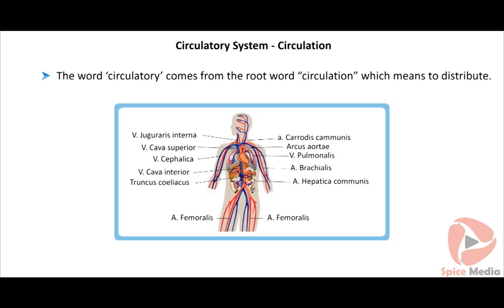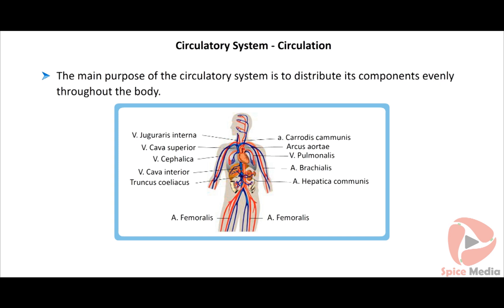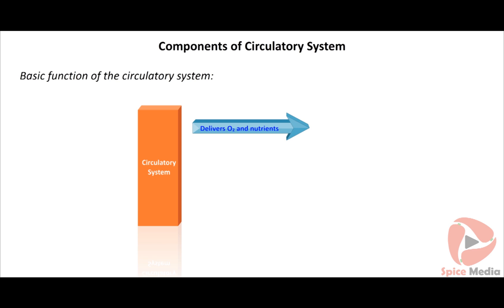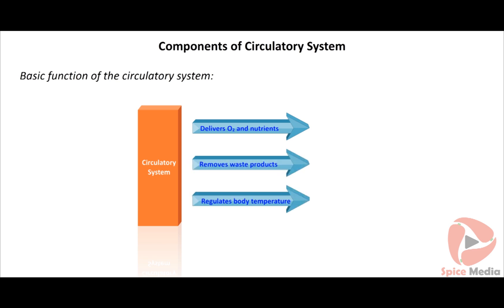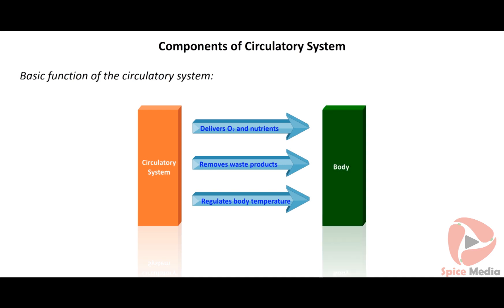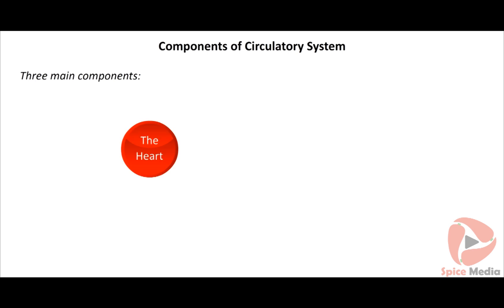The word circulatory comes from the root word circulation, which means to distribute. The main purpose of the circulatory system is to distribute its components evenly throughout the body. The basic functions are to deliver oxygen and nutrients to the cells, remove waste products after metabolic activities, and regulate temperature of the body. The circulatory system has three main components: the heart, blood vessels and the blood.